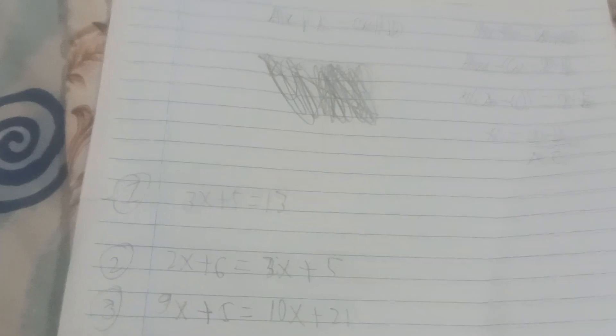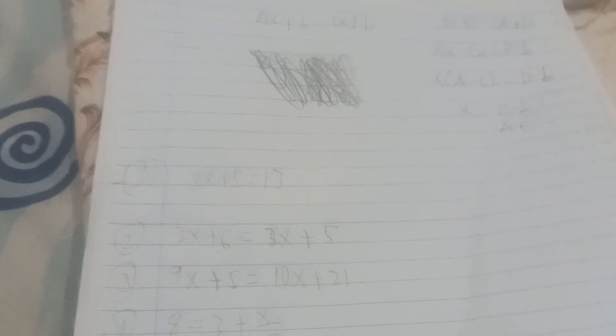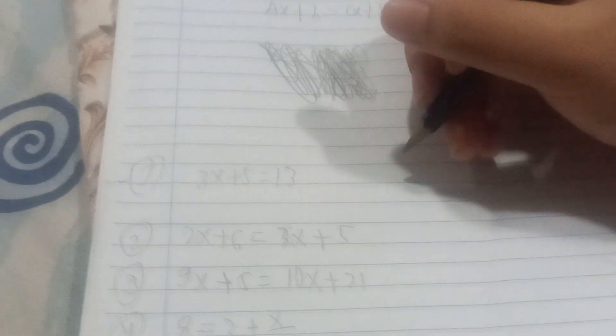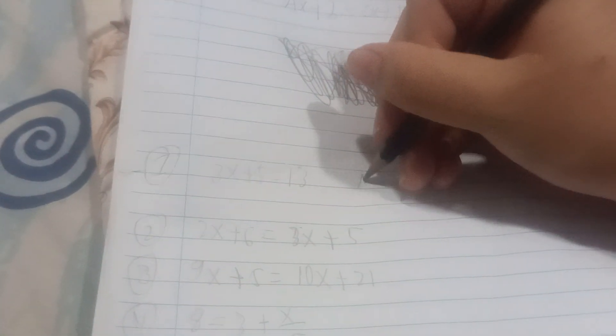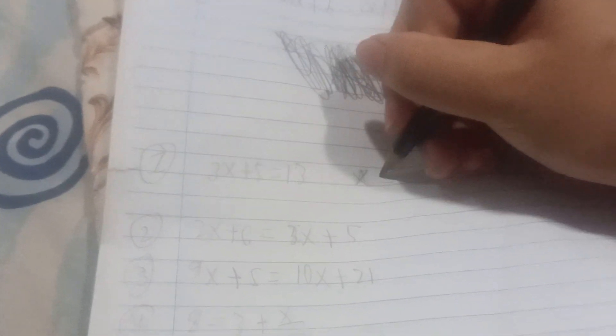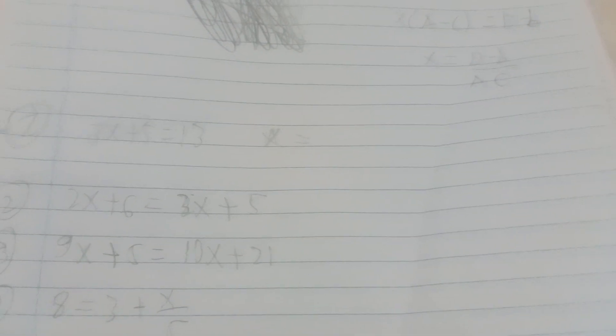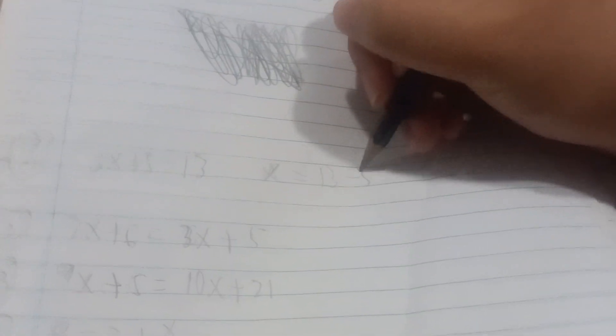So as an example from number one, 3X plus 5 is equal to 13. First, you have to know what is given. A is 3, so we write from this equation X equals. We know A is 3, B is 5, C is 0, and D is 13. So it will be 13 minus...